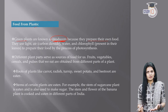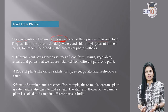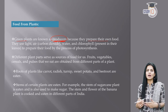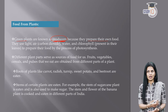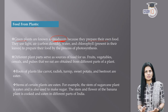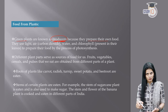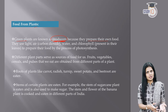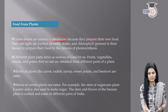Even non-vegetarian food ultimately depends on plants, because the animals we eat themselves feed on plants. So green plants are producers. To prepare their own food, they need: number one — light (most commonly sunlight); number two — carbon dioxide; and number three — water.